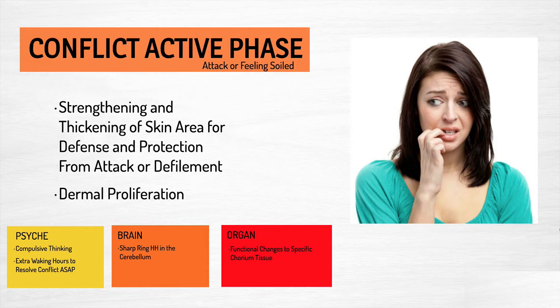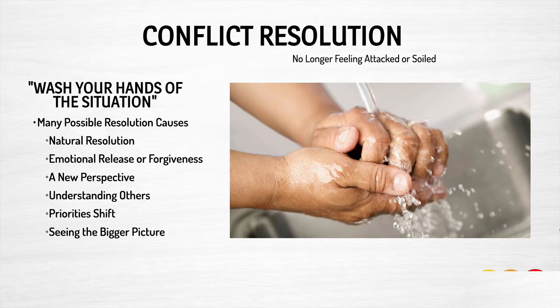As long as you are conflict active, there's going to be tissue recruited — a growing of the corium skin, dermal proliferation. The area will depend on where you perceived the attack or where it was felt. The goal is conflict resolution. We want to get to the point where we feel safe, relieved, no longer feeling attacked or soiled. These little conflicts happen to us all the time — you prick your finger, things like that — where you're not experiencing a huge upheaval and a lot of tissue changes.